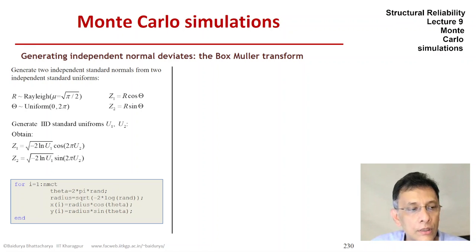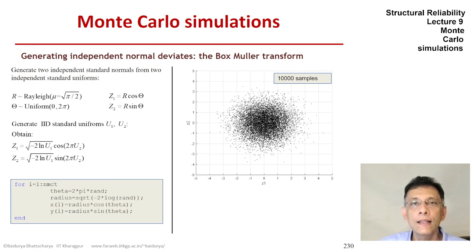So this is what 10,000 samples of this process would look like on the Z1, Z2 plane.